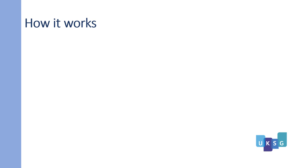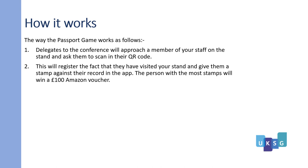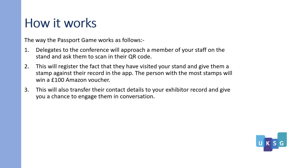How does it work? The Passport game works as follows. Delegates to the conference will approach a member of your staff on the stand and ask them to scan their QR code. This will register the fact they have visited your stand and give them a stamp against their record in the app. The person with the most stamps will win a £100 Amazon voucher. This will also transfer their contact details to your exhibitor record and give you a chance to engage them in conversation. We are sure this will result in a more fruitful conference.